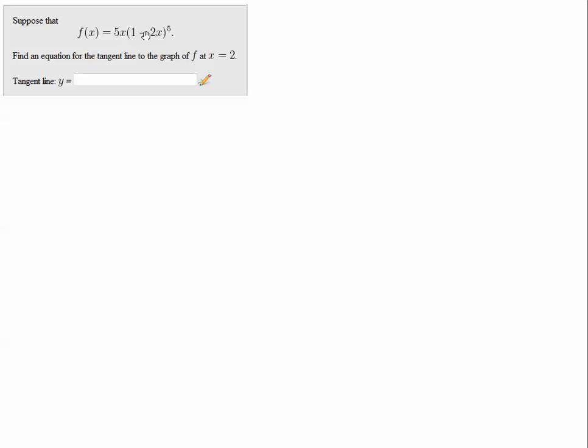Product rule because they're a product of two functions. Chain rule because we have a composition of two functions. We have a function to a power. So that's the nuance with this problem that's going to raise the level of difficulty in solving this problem.